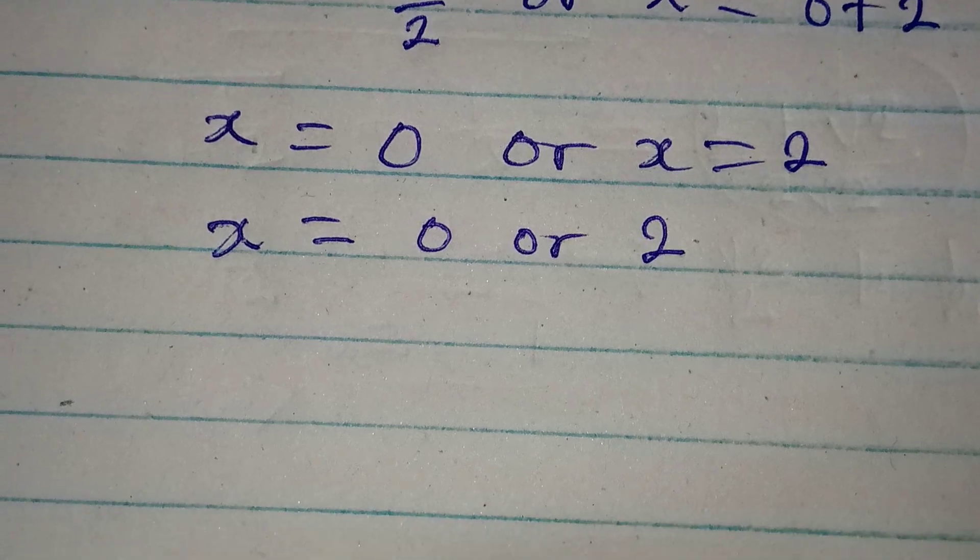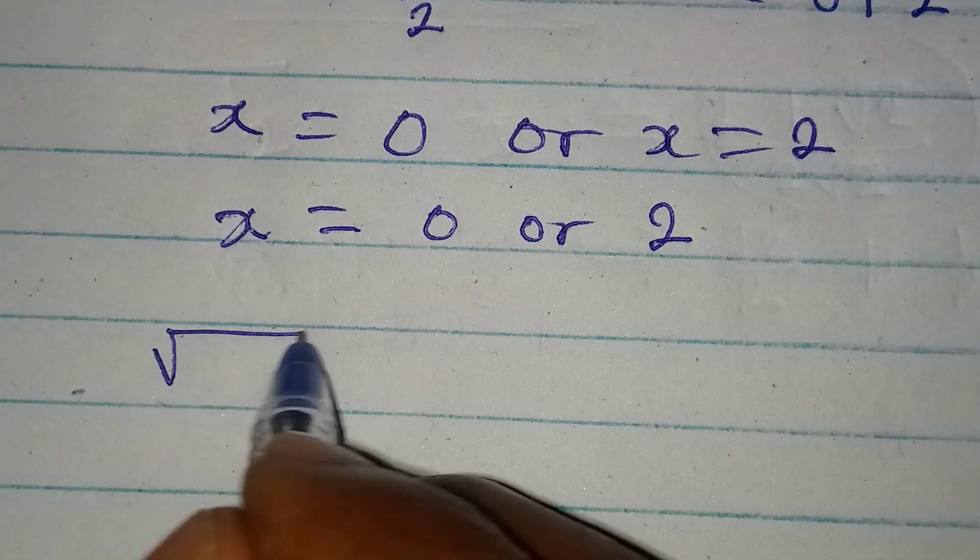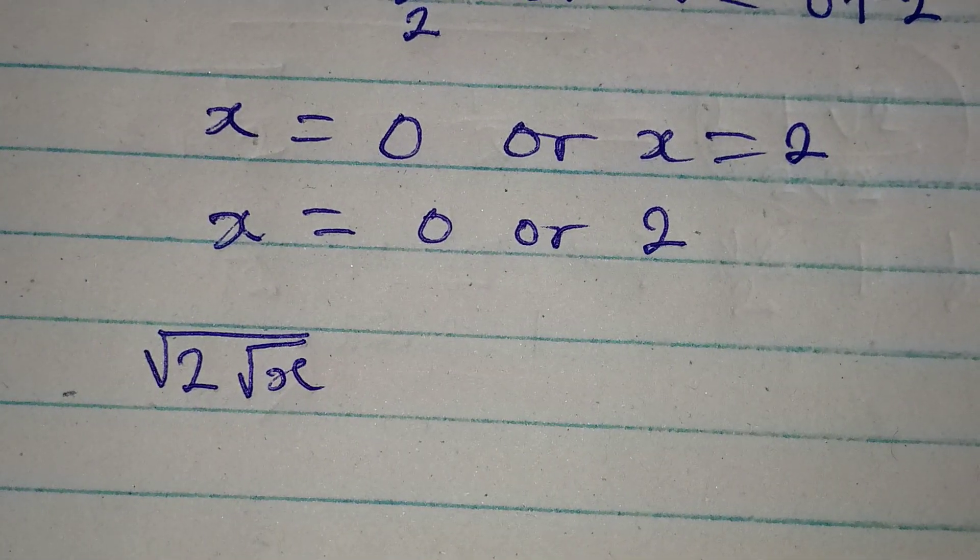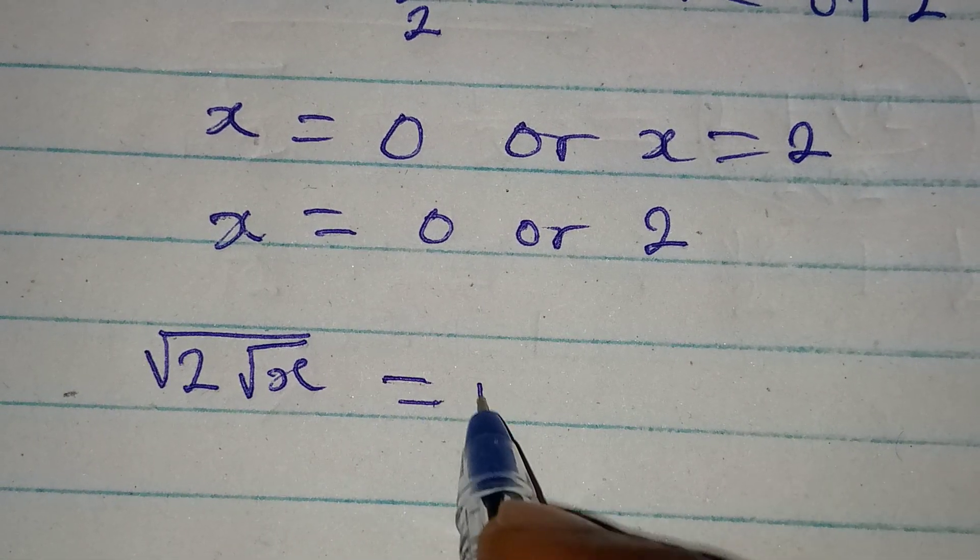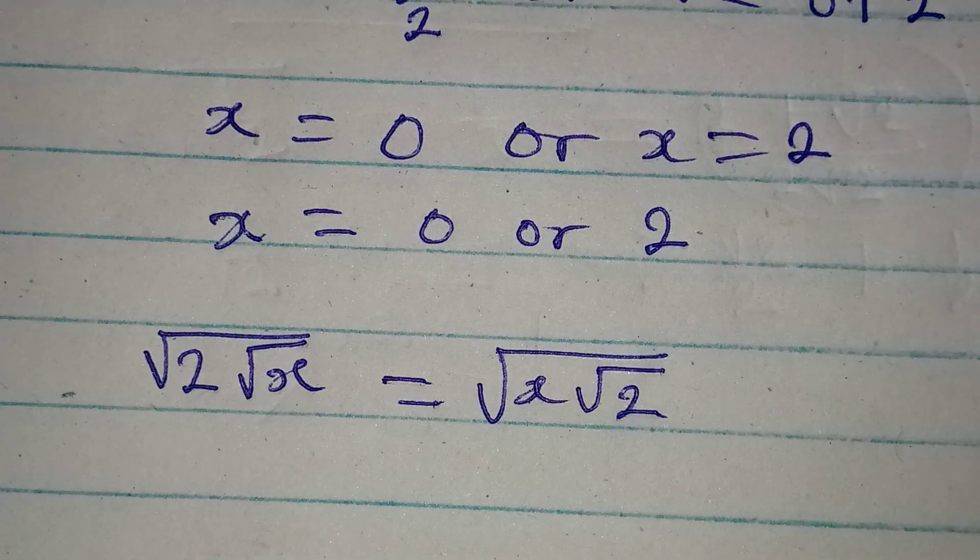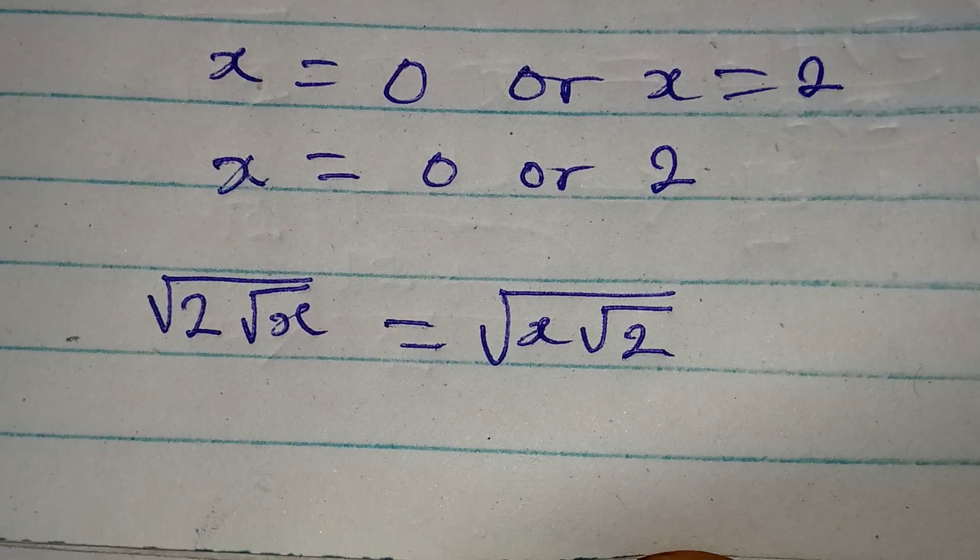Now, remember the original equation where we got square root of 2 square root of x equal to square root of x square root of 2, and we are looking for the value of x.